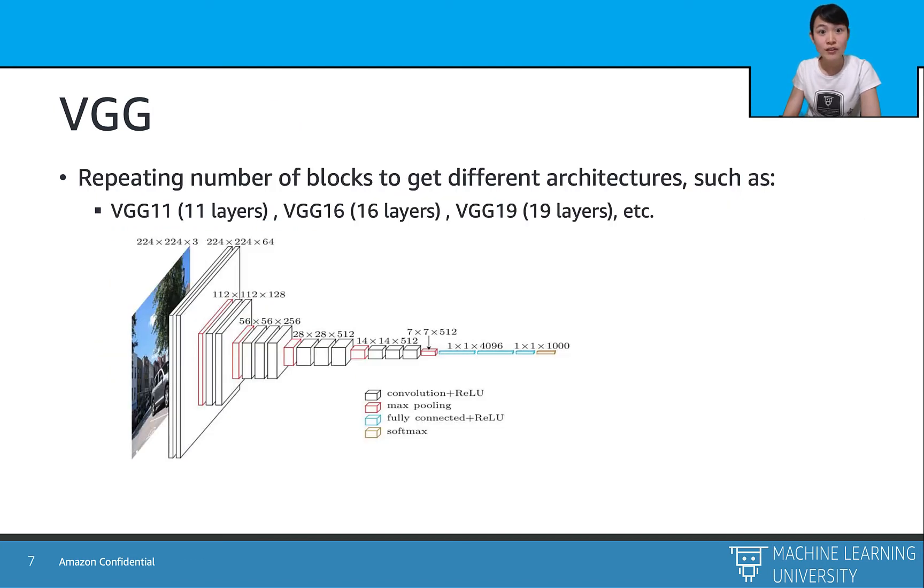So VGG was the first successfully model with the deep structure. Its popular structure variants have the number of layers from 11 to 19. Recall that AlexNet only has 5 convolutional layers.